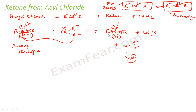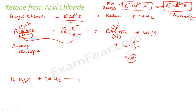To prepare CDR2, what we do is take RMGX — the Grignard reagent — and react it with CdCl2 (cadmium dichloride). This gives CDR2, that is dialkyl cadmium, with Cd having a 2 plus charge and each R group having a minus 1 charge. So that is how CDR2 is prepared.